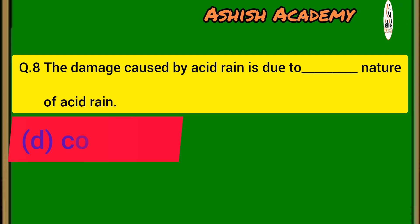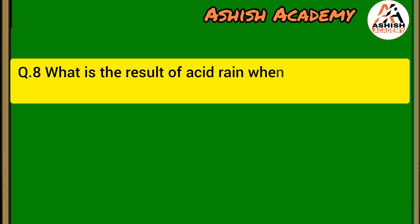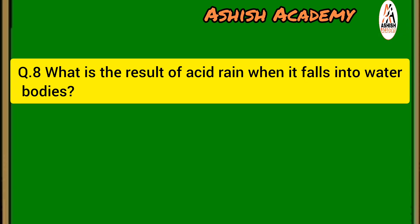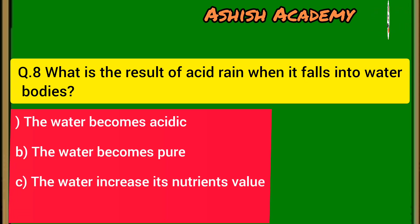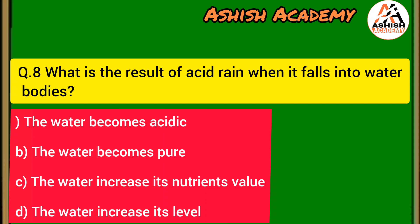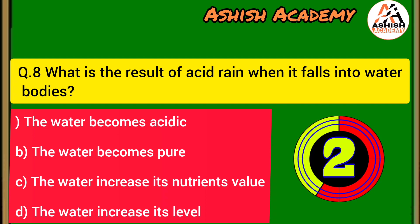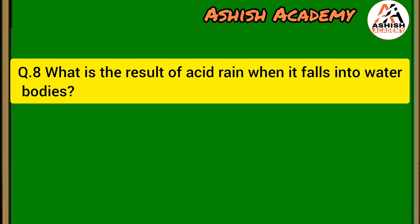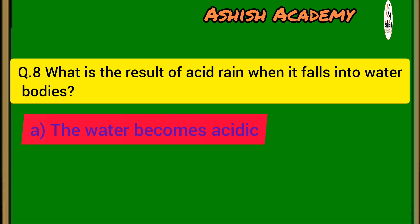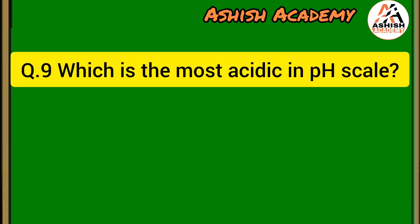Next question: What is the result when acid rain falls into water bodies? Correct answer: the water becomes acidic.